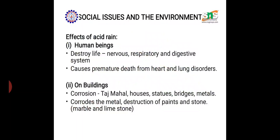When acid rain falls on buildings, the materials get corroded. For example, the Taj Mahal is made of calcium carbonate, which is insoluble in water. When sulfuric acid from acid rain falls on it, calcium carbonate is converted into calcium sulfate and gets corroded. Due to this, the government banned certain leather tanning industries around Agra. Statues, bridge materials, metals, paint, and stone also get corroded.